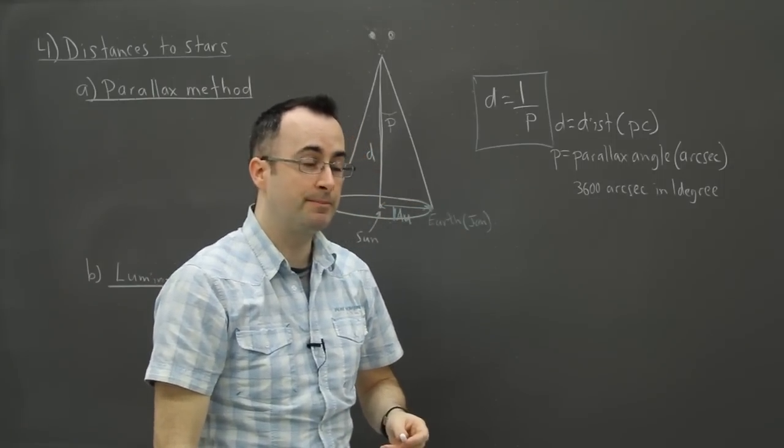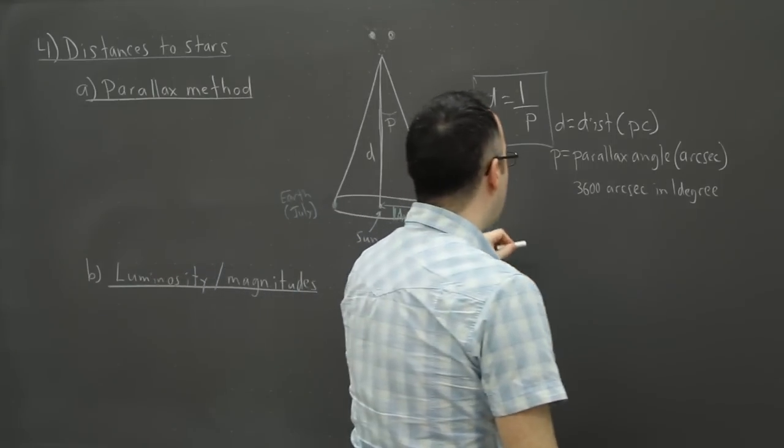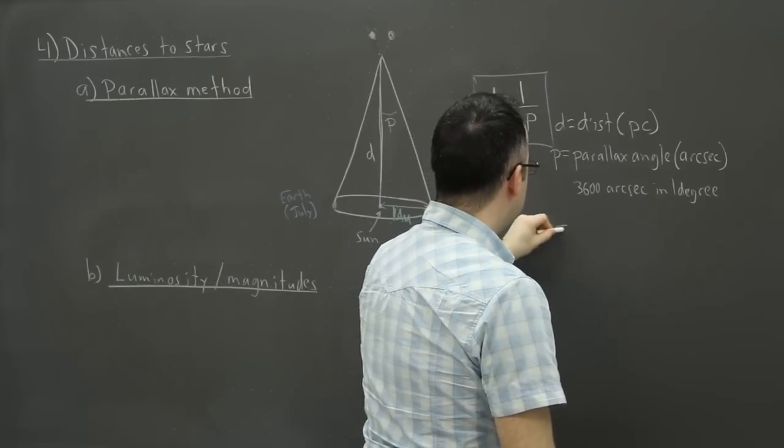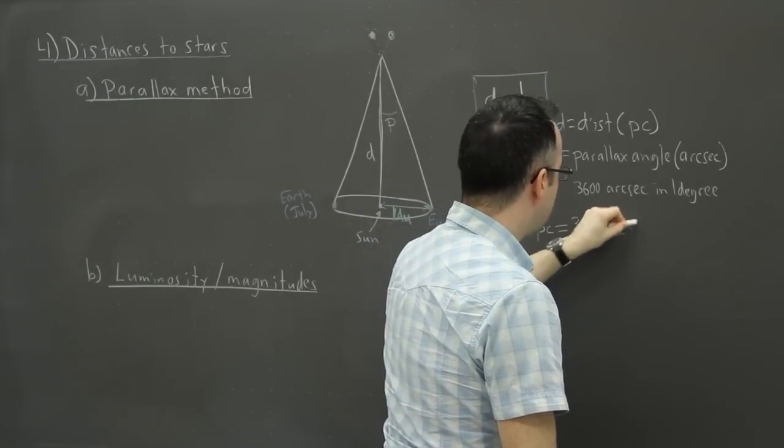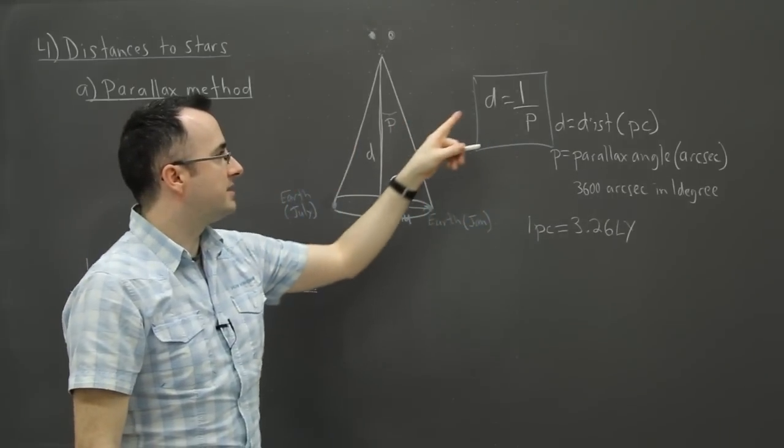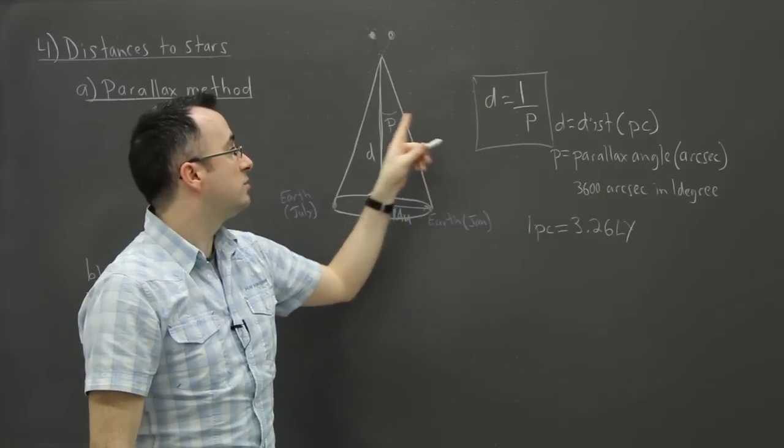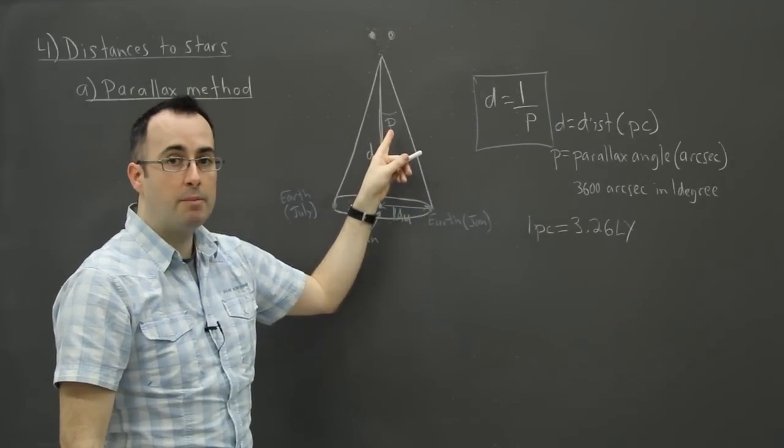Remember that one parsec is approximately equal to 3.26 light years. So then we can actually tell the distances to stars as long as we see the parallax happening.